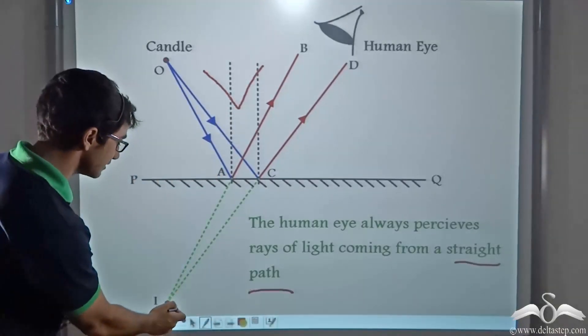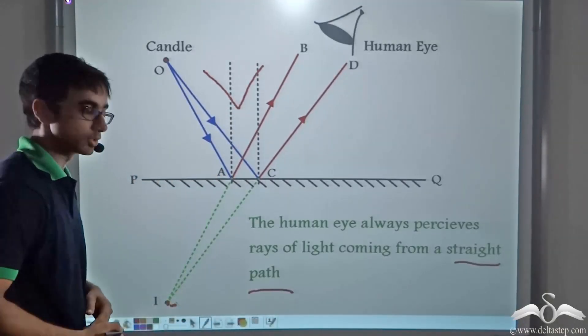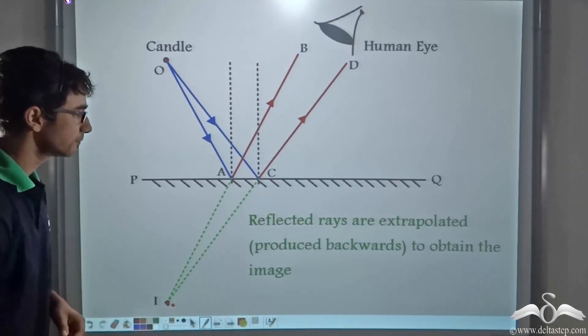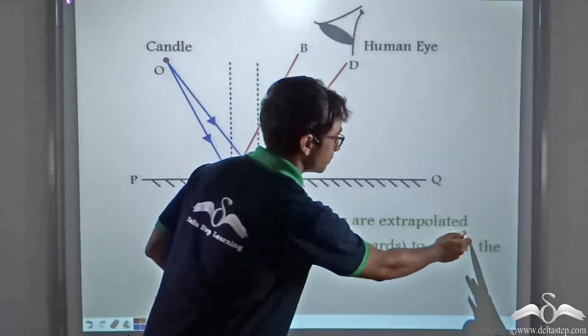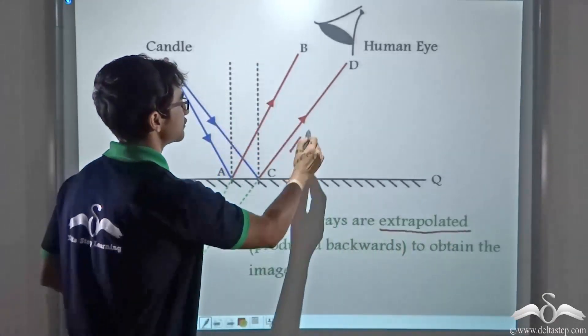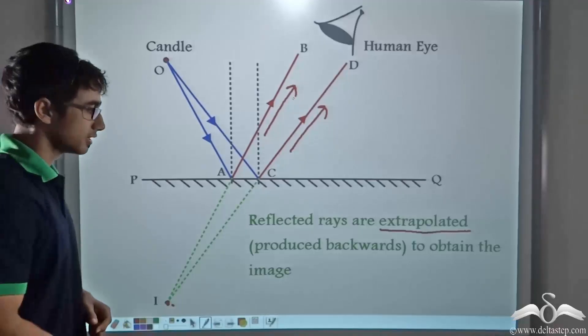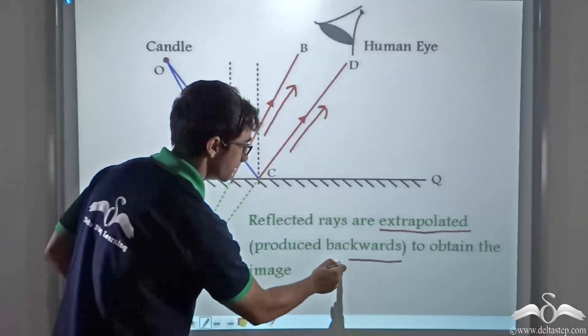So how are we getting this image? Let us find out. We are obtaining the image on the mirror by extrapolating these reflected rays. What is the meaning of extrapolating? We are producing them backwards.